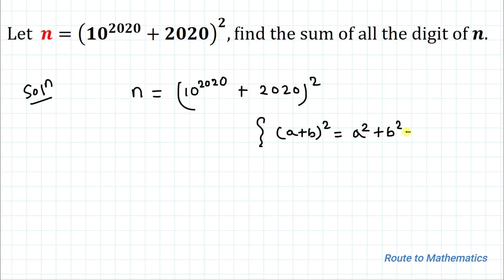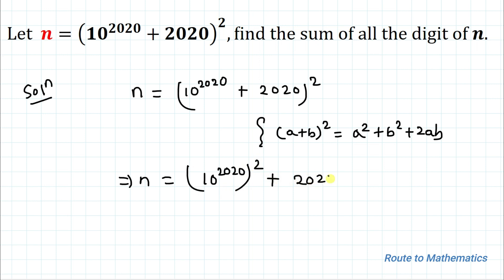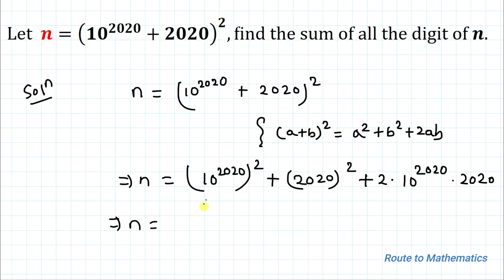We can write n equals (10^2020)² + 2020² + 2 × 10^2020 × 2020. This implies n equals, by applying the exponential rule that a^m to the power n equals a^(mn), so the powers get multiplied.